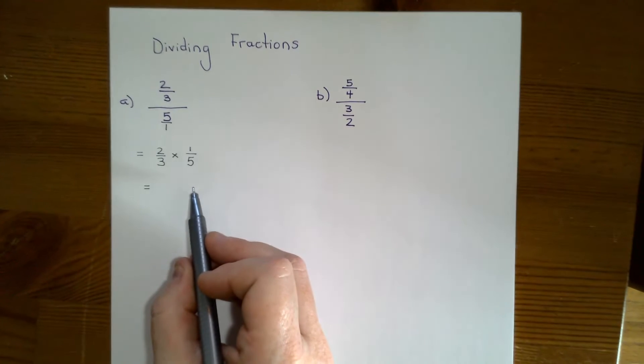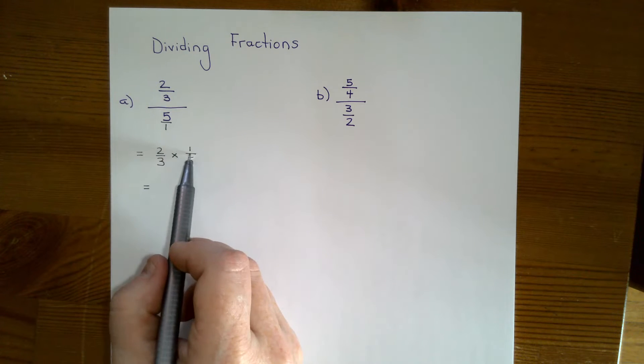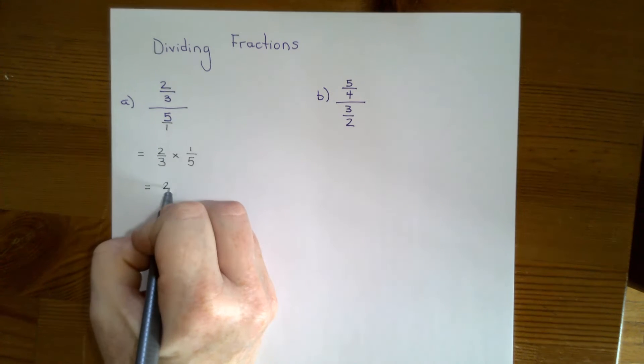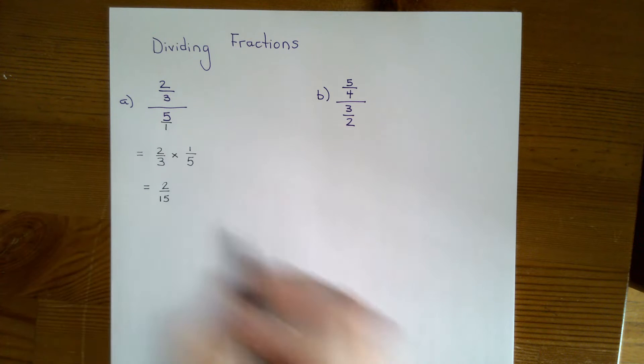When you're multiplying fractions, you multiply the numerators and you multiply the denominators. So two times one is two, and three times five is 15. And then I'm done.